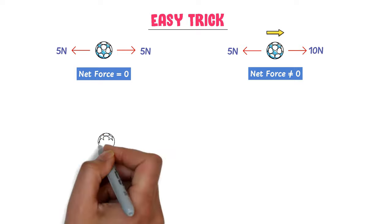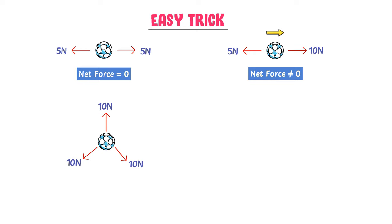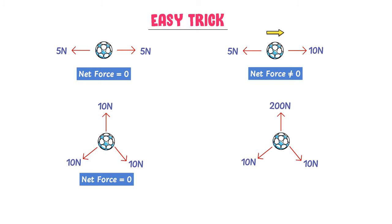Similarly, consider another case where the ball experiences three forces of 10N in three different directions. Here, the net force is again 0 and the ball doesn't go anywhere. Lastly, consider a case where one force of 10N acts in one direction, another 10N force acts in another direction, while a force of 200N acts in a third direction. The net force is not 0, and the ball will move in that direction.